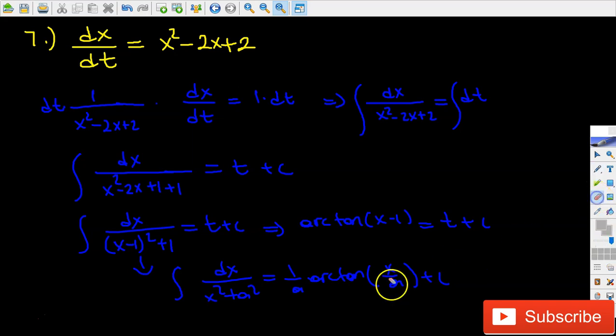Then I would like to solve this equation for x. In order to solve for x, first I'm going to take the arc tangent of both sides. When I do that, what I'm going to get on the left hand side will be x minus 1 equals arc tangent of t plus c.